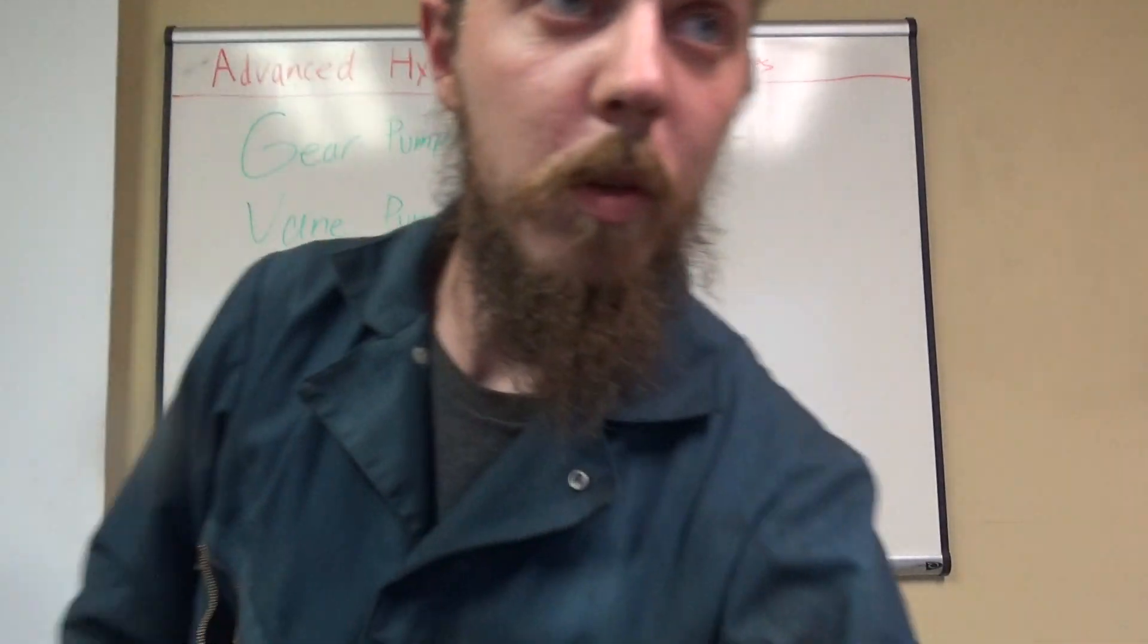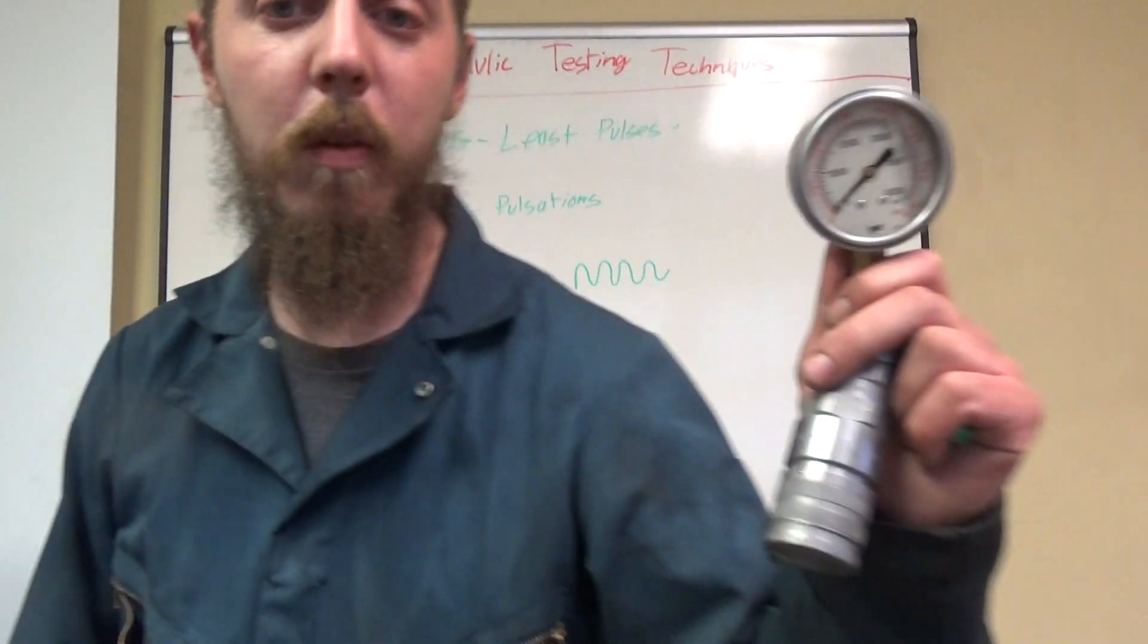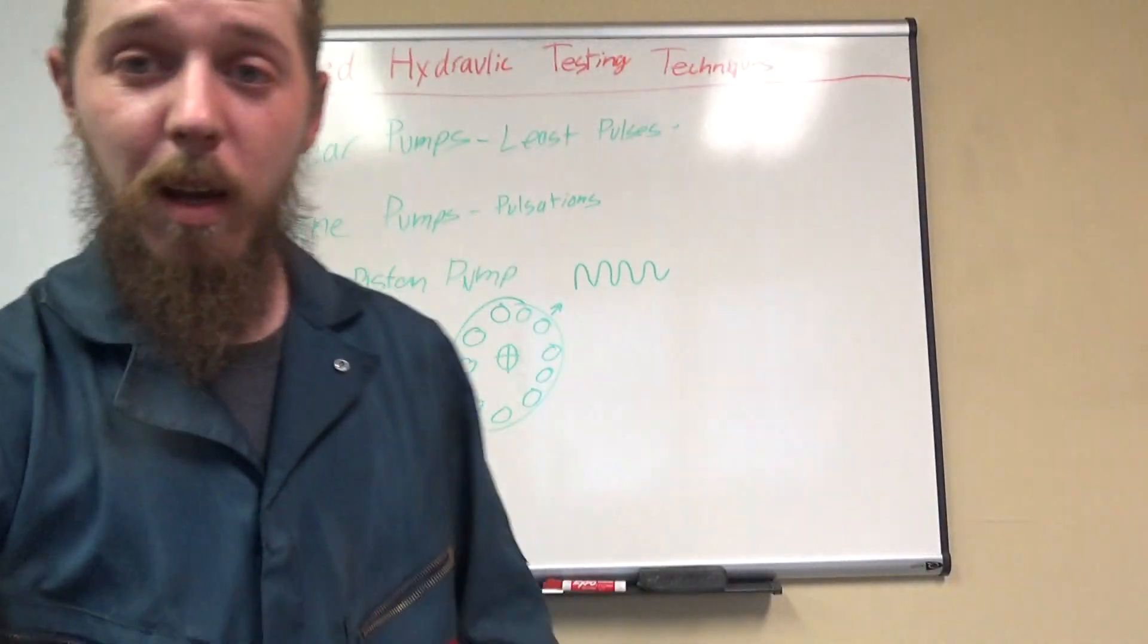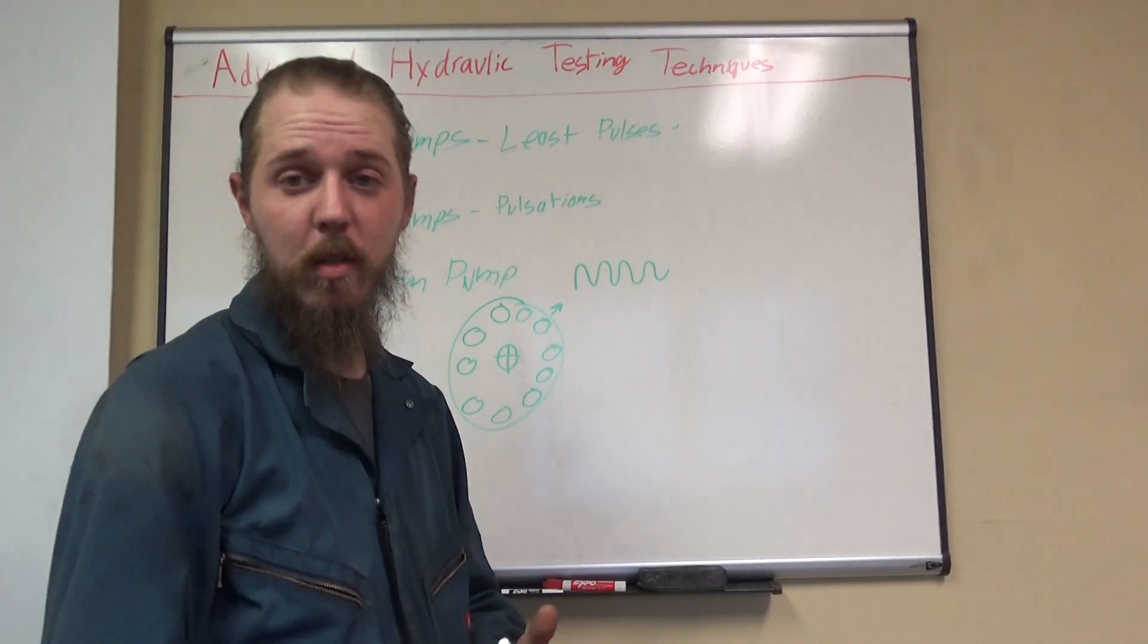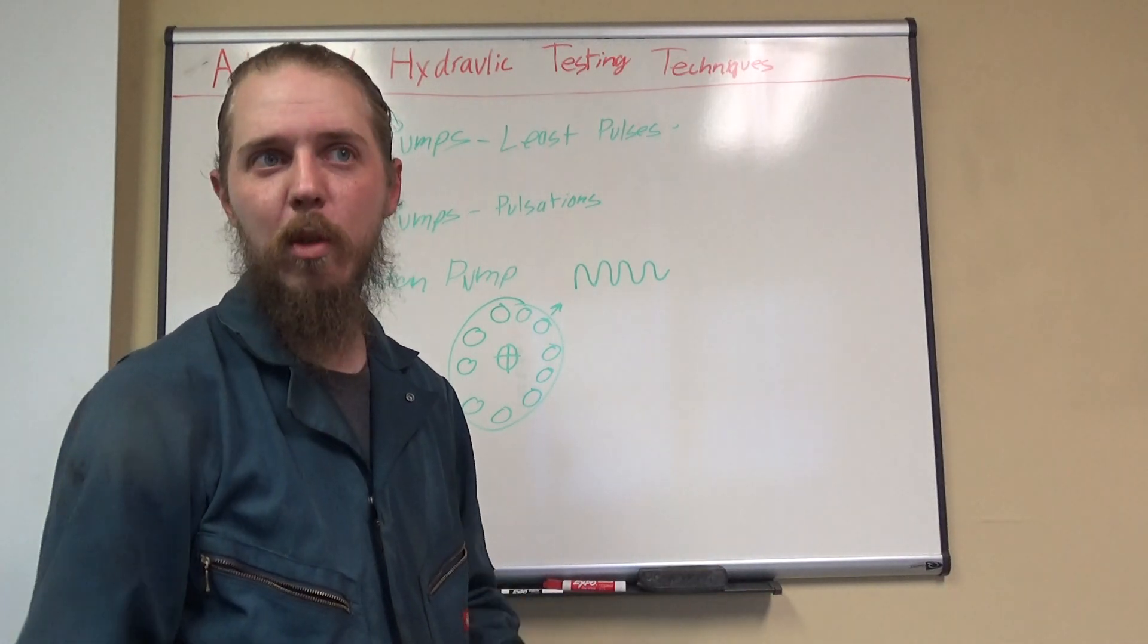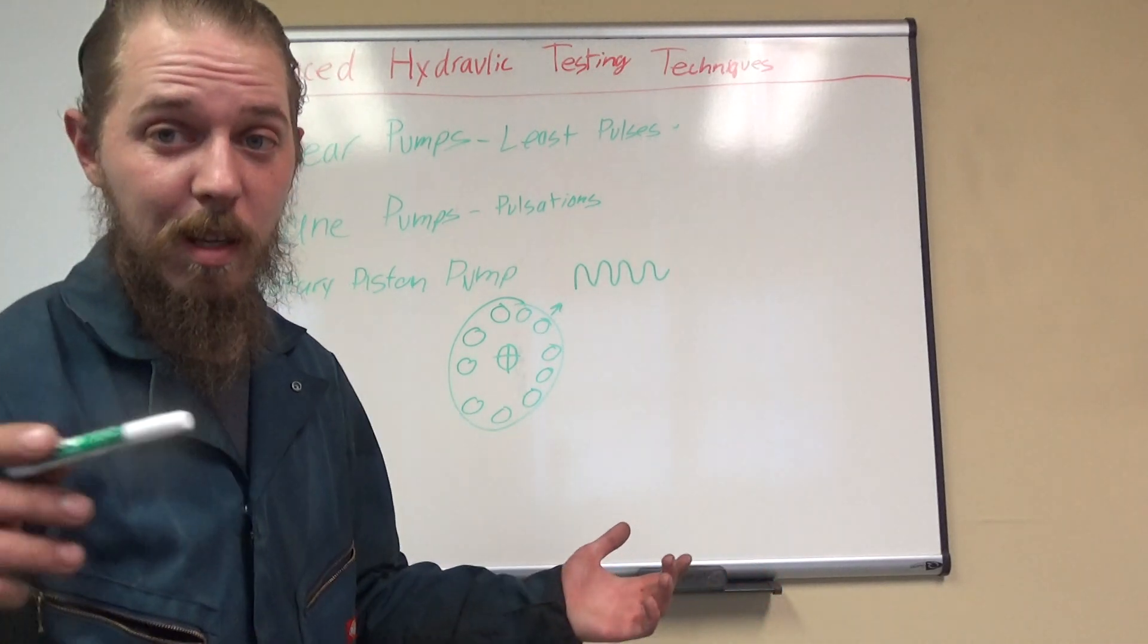Now, on your regular digital gauge, or even on your analog gauge, you are not going to see this. If we're talking a 4000 PSI system, it may be a 200 PSI fluctuation, which in the grand scheme of things, is nothing.